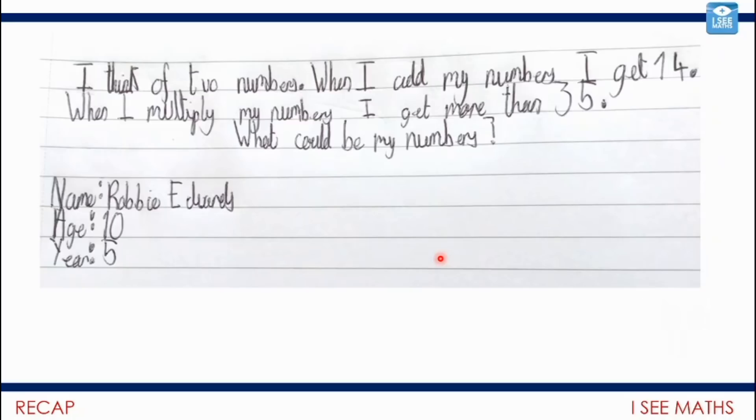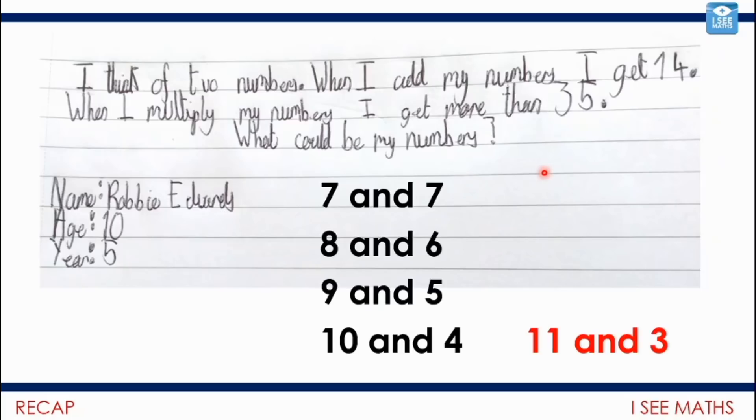So I'd start with 7 and 7. And I know that will give me my largest product with two numbers with a sum of 14. And then essentially I'll work down. And I'll think, where do I get to a combination where I fall below 35? So I could still go for 10 multiplied by 4, it would get me to 40. So all of these combinations work because they're in between 7 and 7 and 10 and 4. 11 and 3 is the first one that doesn't work. So there are four possible answers.